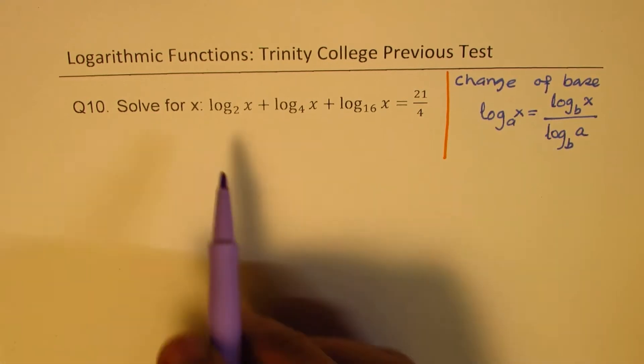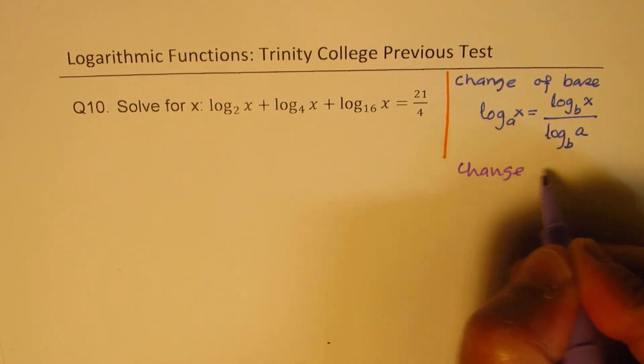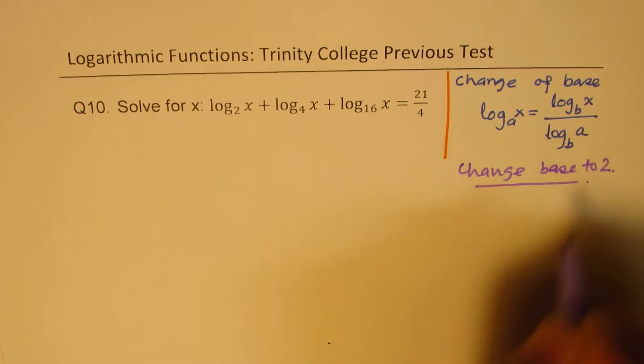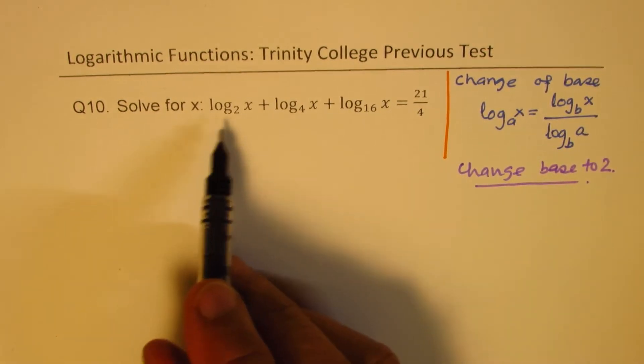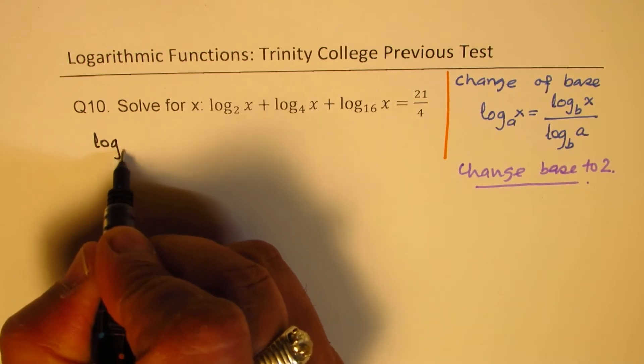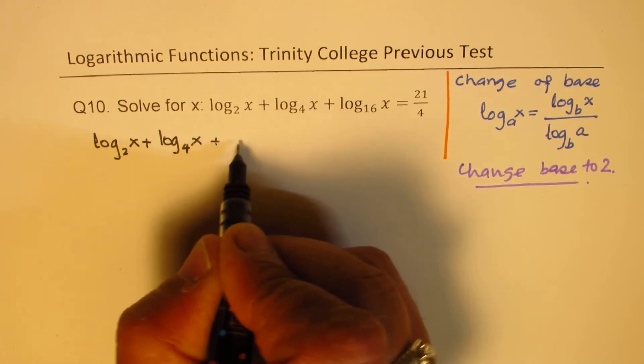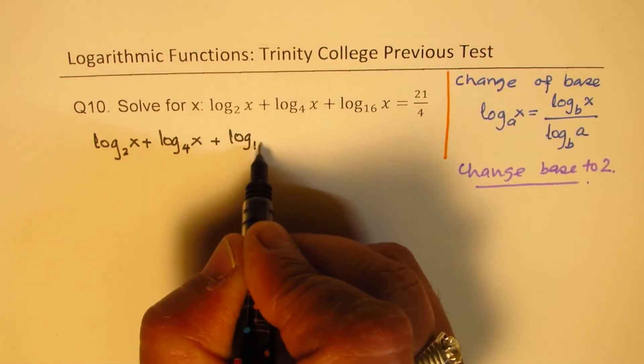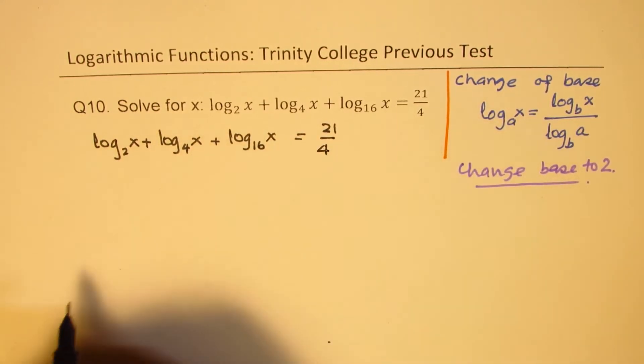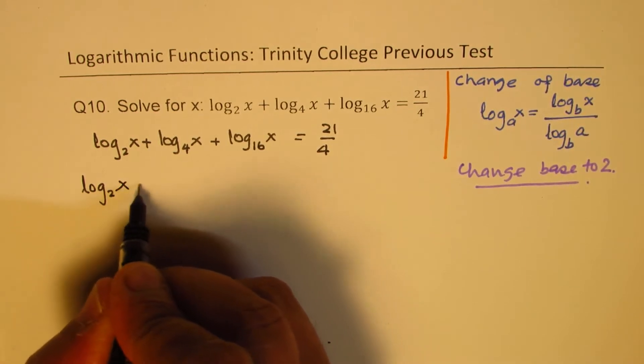So as you can see, the bases are different. So we'll change base to 2, so that is the criteria. So if I change base to 2, what do I get? Let me rewrite the equation. We are given log₂(x) + log₄(x) + log₁₆(x) = 21/4. Now first one is okay, let's keep it as log₂(x).